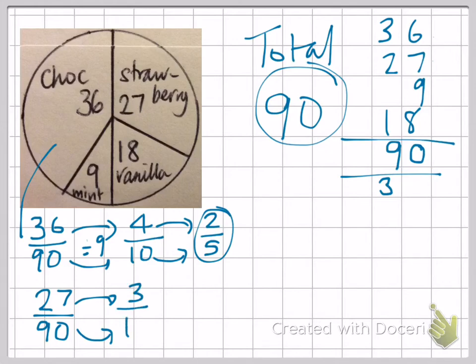That will give us 3 on the top and 10 on the bottom, and that one can't be simplified. So three tenths of the children prefer strawberry.